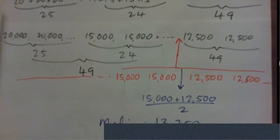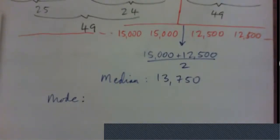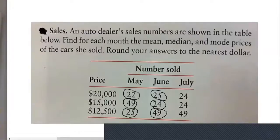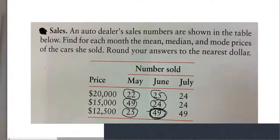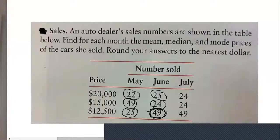What's the mode for June? The mode is the most common sales price. In June, the most common price was $12,500 because we sold 49 cars at that price. So the mode for June is $12,500.